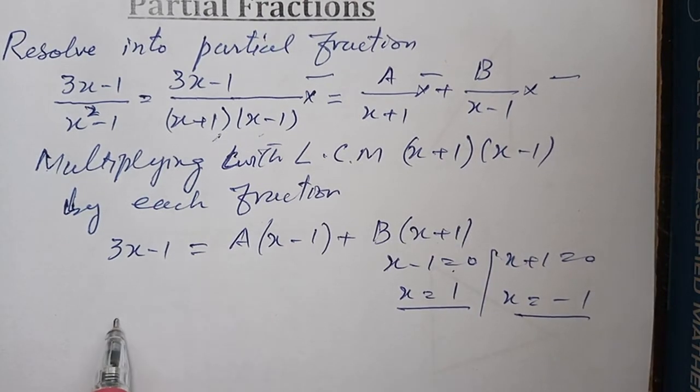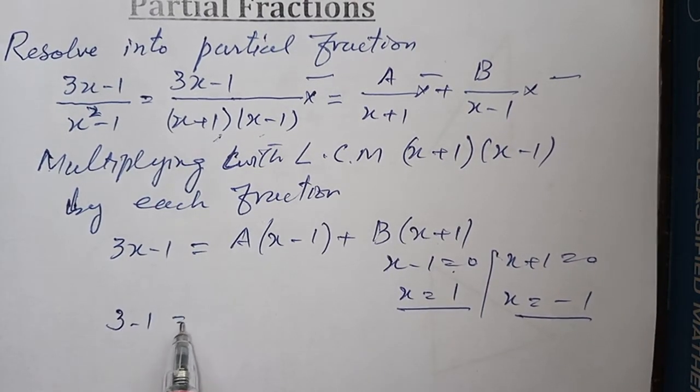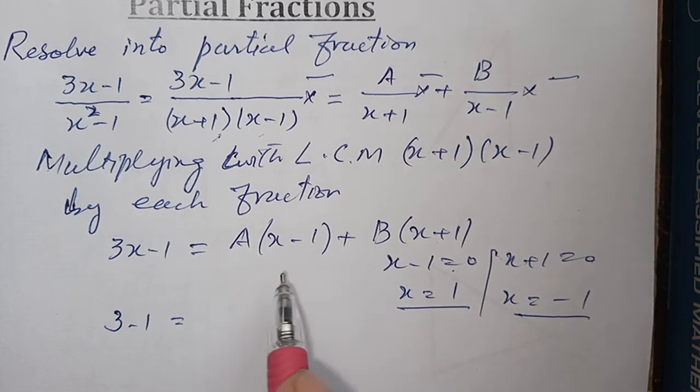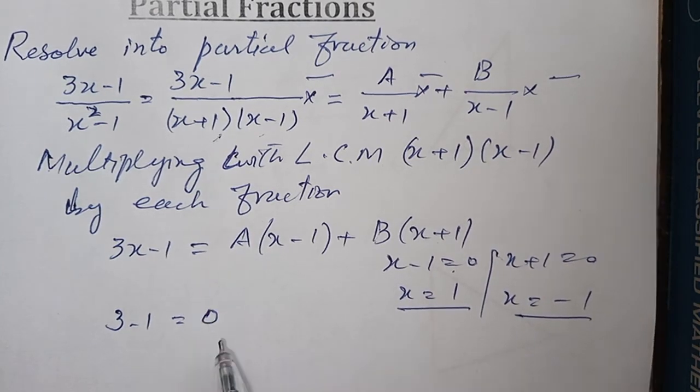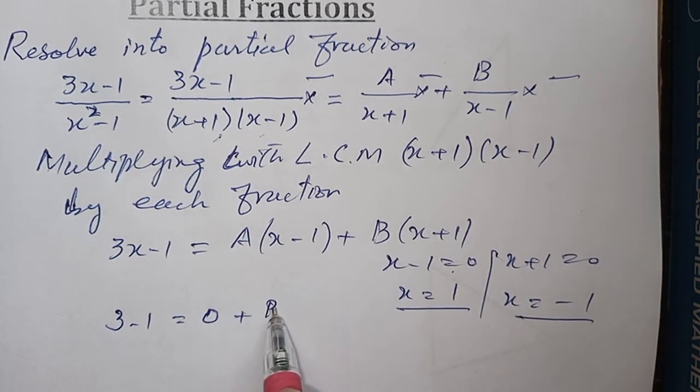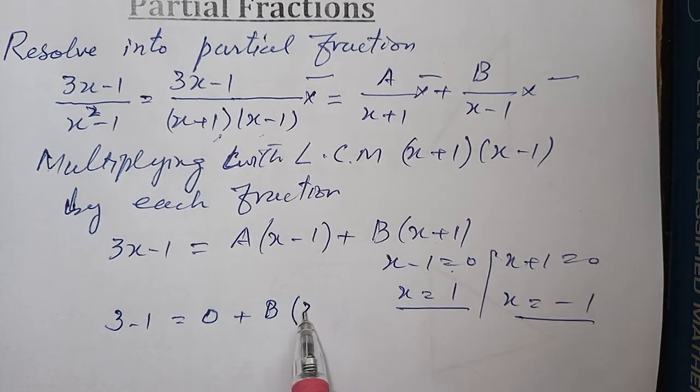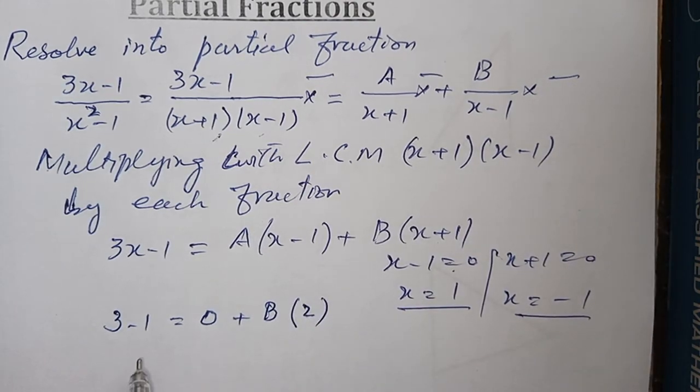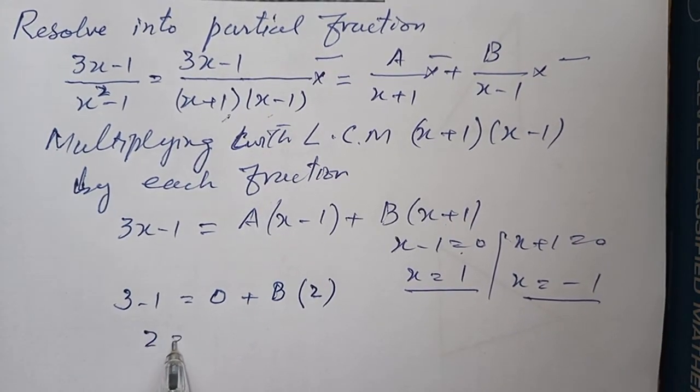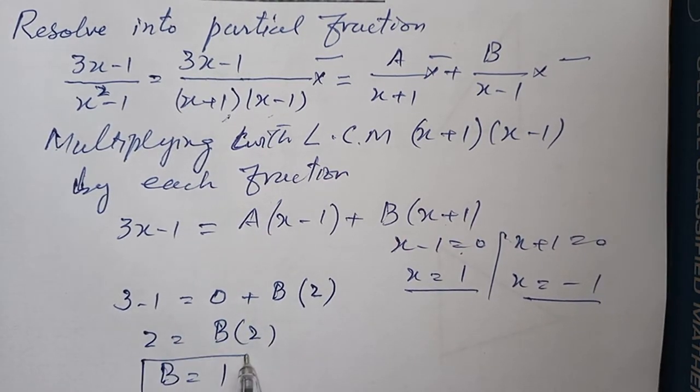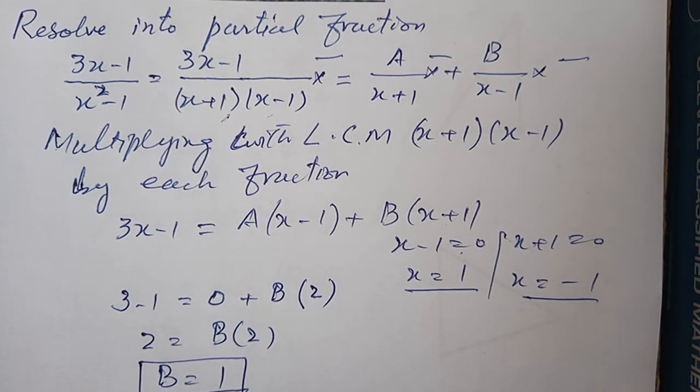पहले मैं x का value 1 लेता हूं: यह हो जाएगा 3 minus 1 is equal to A, चूंकि हो जाएगा 0 के minus 1 plus 1, cancel out हो जाएंगे, और B का 1 plus 1, 2 हो जाएगा. अब 3 minus 1, 2 is equal to B into 2. B का value हो जाएगा 1, चूंकि 2 को 2 से divide करेंगे, answer 1 मिलेगा.